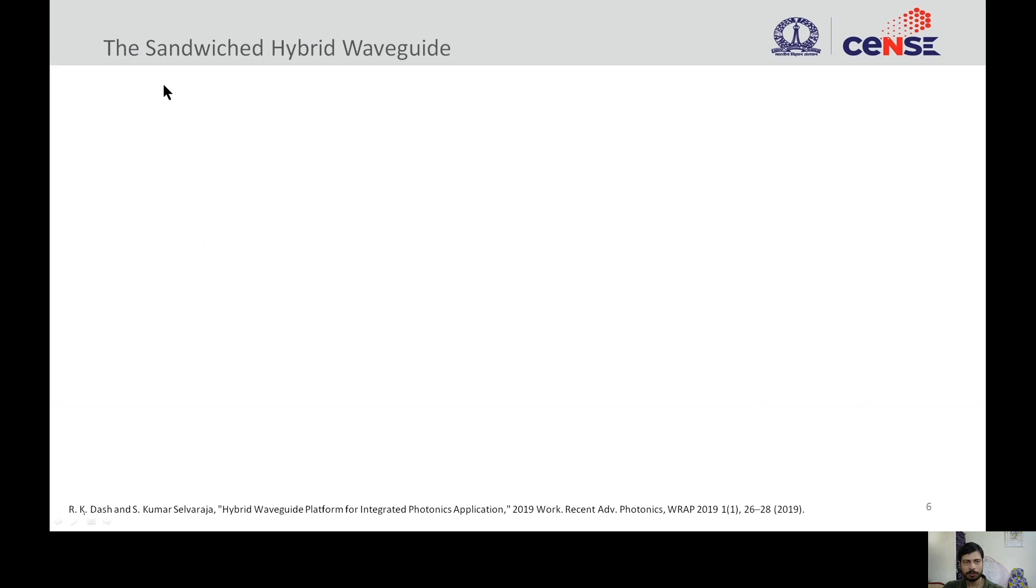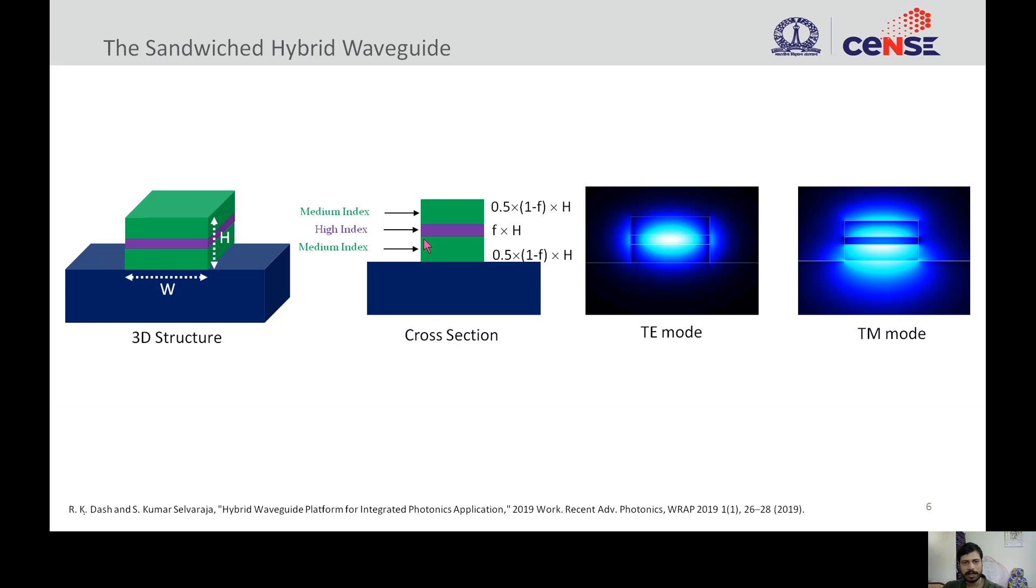From these requirements, we propose the sandwiched hybrid waveguide, in which a high index material is sandwiched between two medium index materials. Based on polarization, light can be confined either in the high index medium if the mode is TE, and for TM mode, light can be confined in the medium index material. The sandwiched hybrid waveguide has three geometrical parameters: width, height, and fraction. This fraction is defined as the ratio of the thickness of high index material to the total height. In this work, the height has been fixed at 500 nanometers, and we vary the value of fraction to tune the waveguide properties. We have chosen silicon nitride as the medium index material and amorphous silicon as the high index material, because these materials can be easily deposited using tools like PECVD.